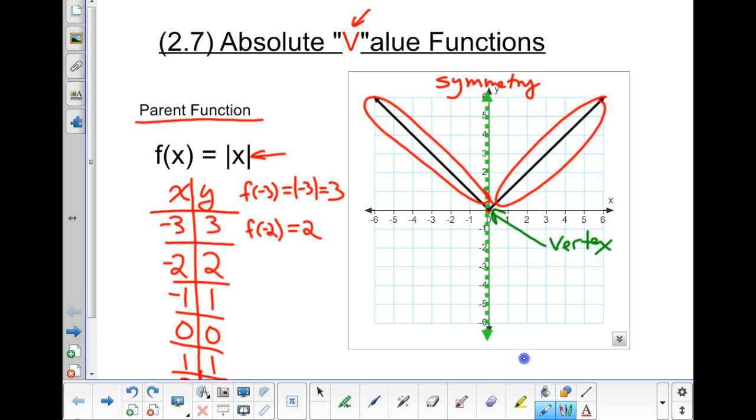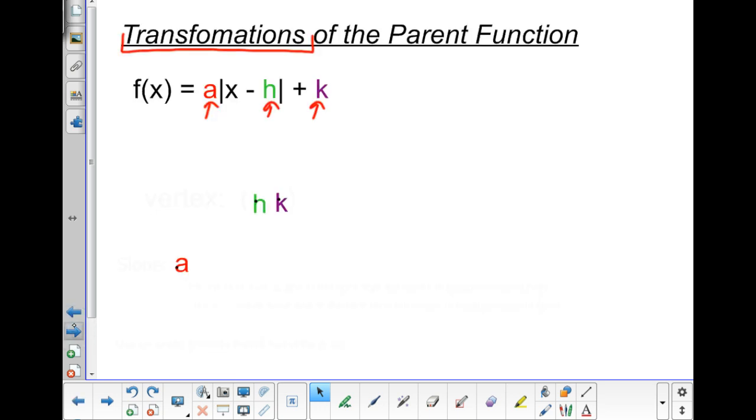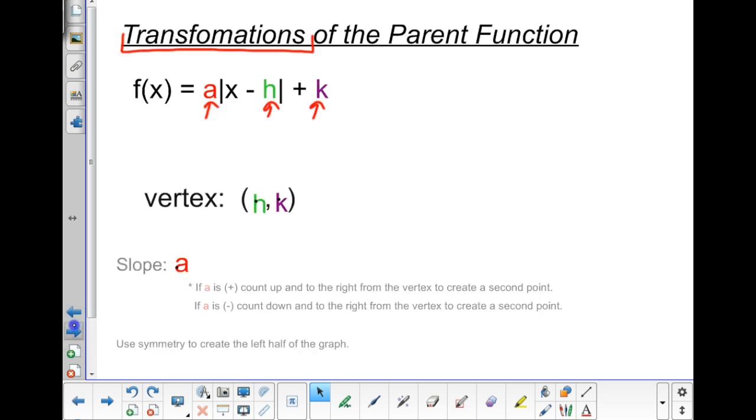So, if you let it make sense, if the right half of the graph has a slope of up one, right one, then to create my symmetry, if I start from the vertex, I could be able to go up one and left one, okay? Well, with that in mind, then, to create a third point on my graph, other than just the vertex and using the slope to create my second point, I can now use the idea of symmetry to create the left half of the graph.